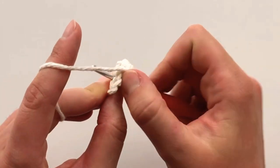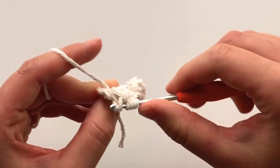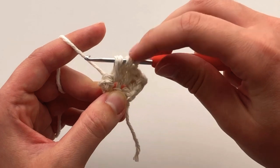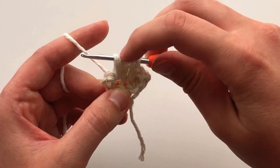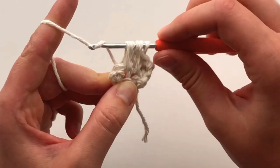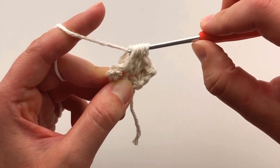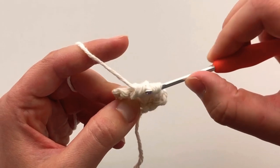We are going to do 1 more unfinished double crochet. So yarn over, pull through, you now have 5 loops on your hook. Yarn over, pull through the first 2, so you have 4 remaining.